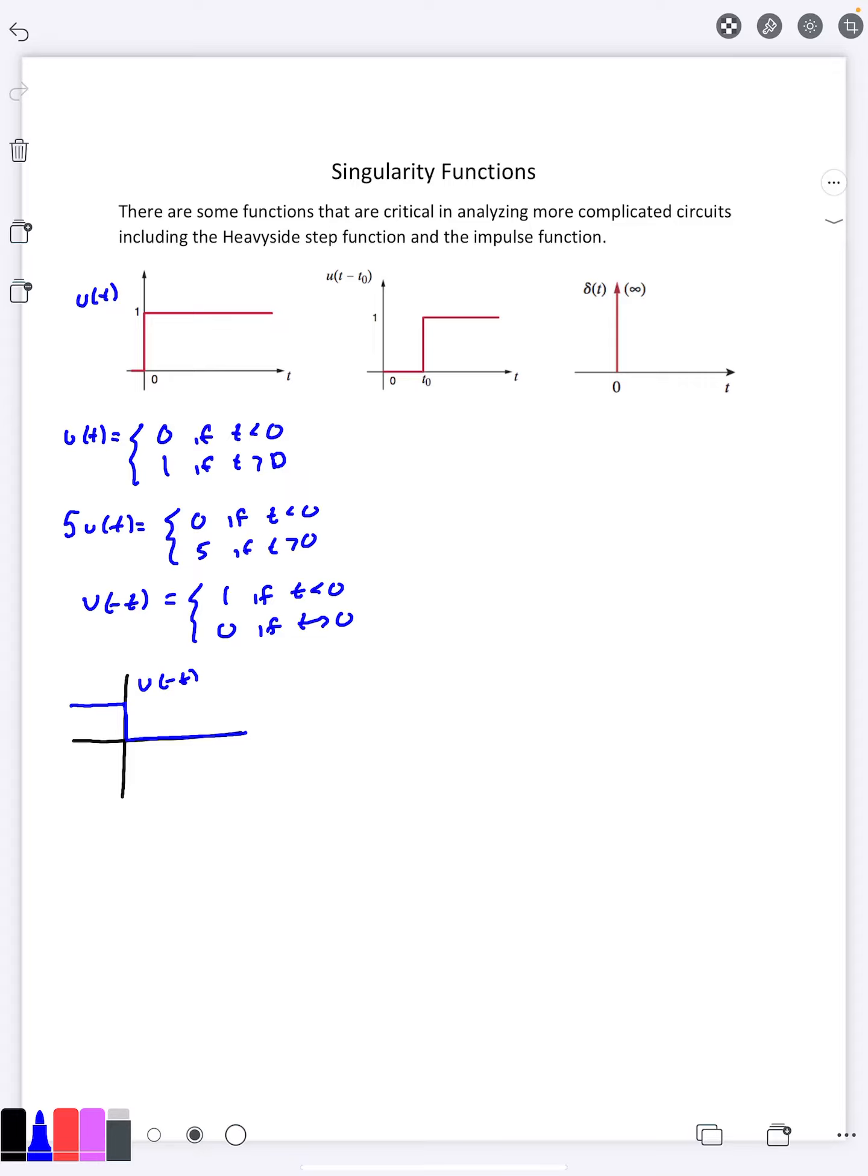Or if you'd prefer not having it turn on or off at 0 but turn on or off at a different time, that's when we do something like u of t minus t0 and so t0 ends up becoming the switching time of that. In terms of piecewise functions, u of t minus t0 is either 0 if t is less than t0 or 1 if t is greater than t0.